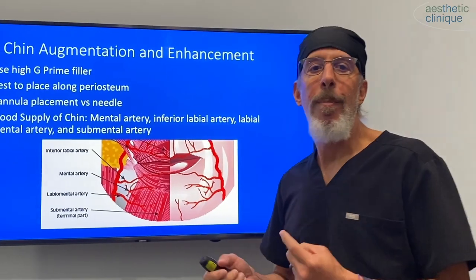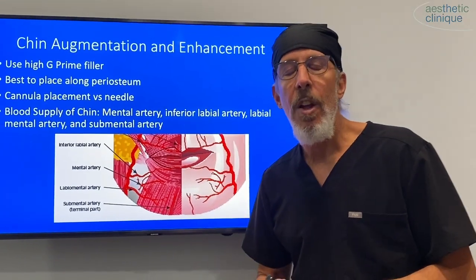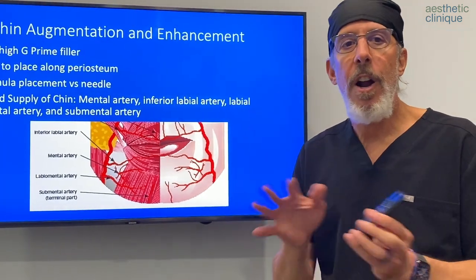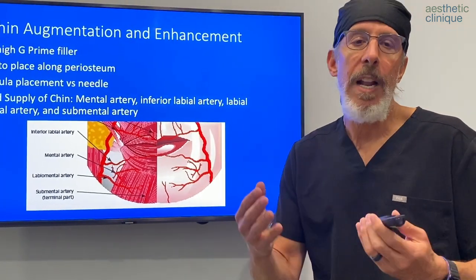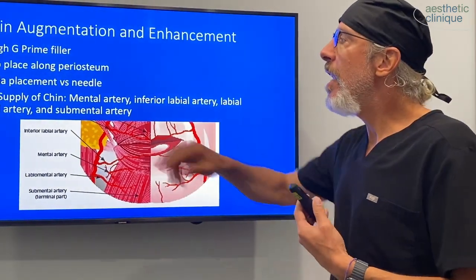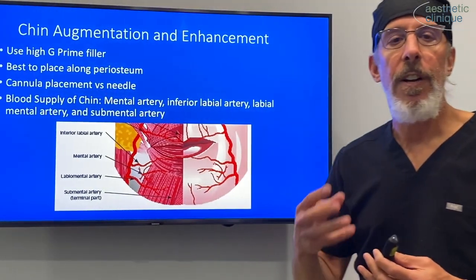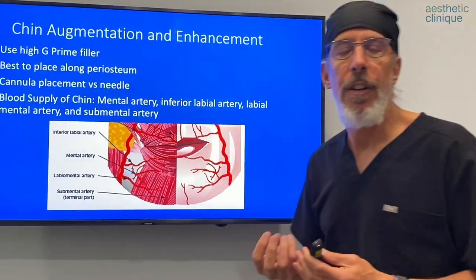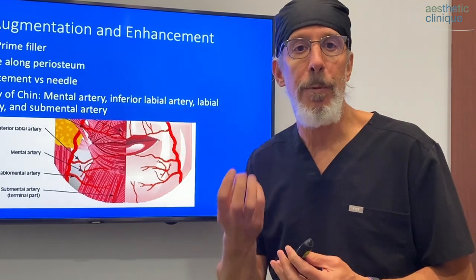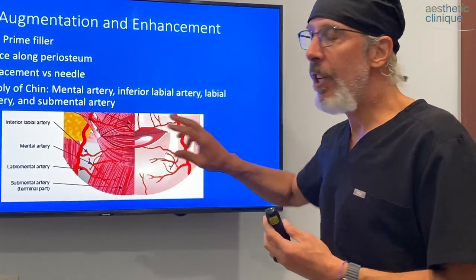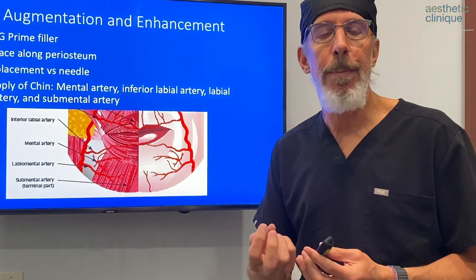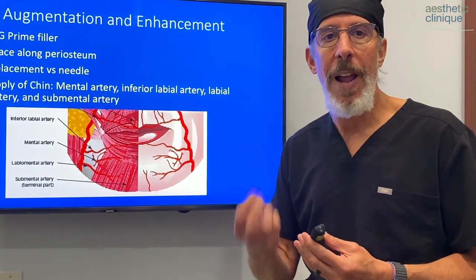How do you augment or enhance a chin? You can use either needles or cannulas — I prefer cannulas. You need to use a very high G prime filler, meaning it's very sturdy, structured, and can support things. The chin needs a lot of support, and you need to inject it deeply along the periosteum.